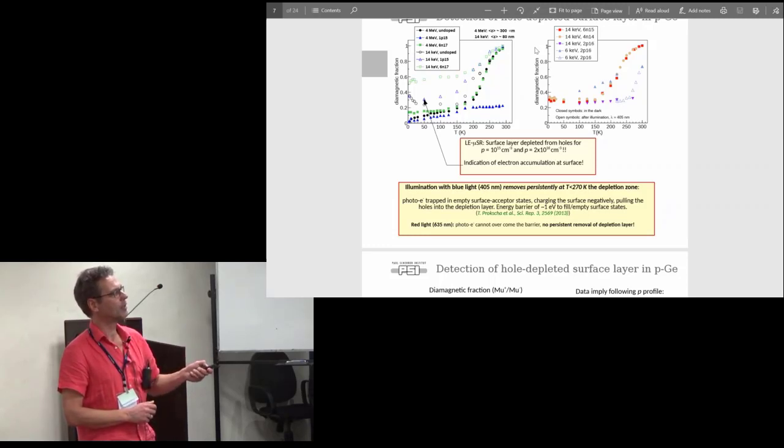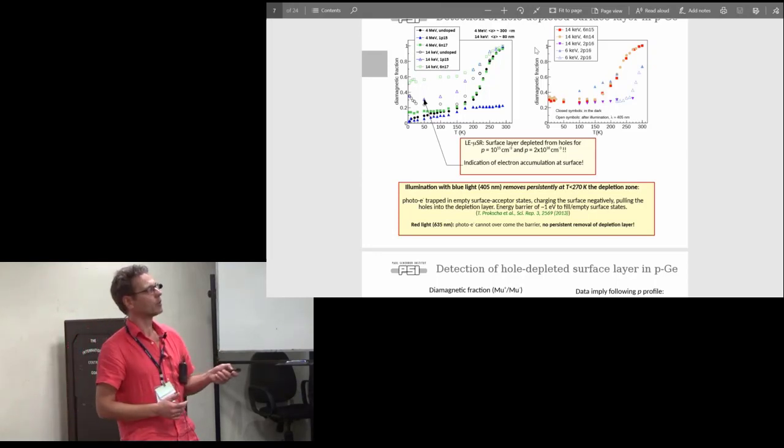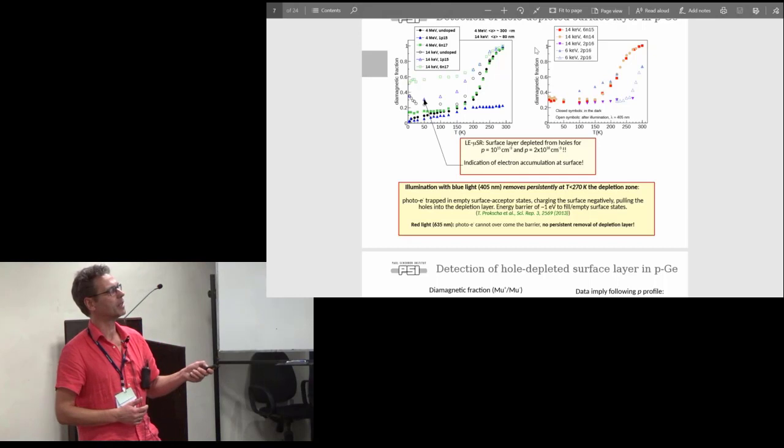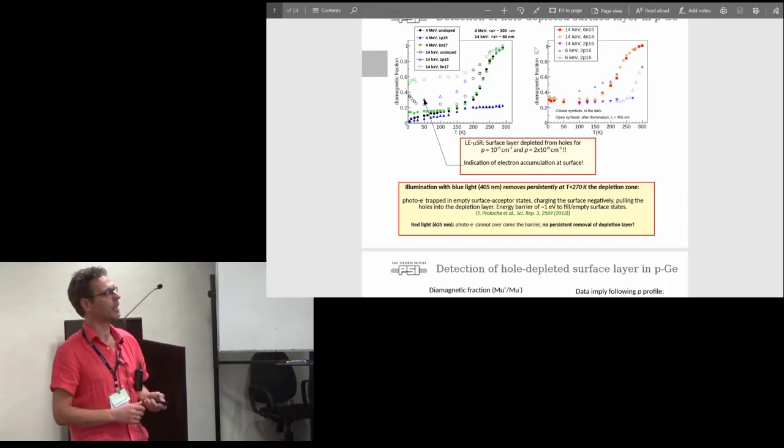In the n-type samples we see this increase because of the muonium minus formation above 200 Kelvin. For the p-type we see this little increase here, this is the ionization of the bond-centered muonium state but then it stays constant. This happens because when the muonium minus state forms there are so many holes around that it immediately goes back to the neutral state. We don't see the muonium minus state appearing because the holes drive it immediately back into the neutral state.